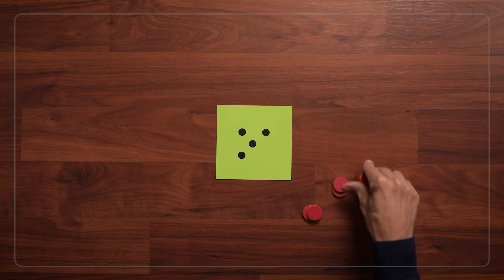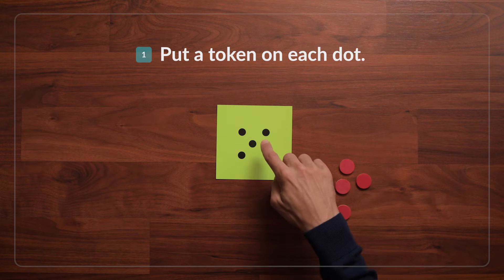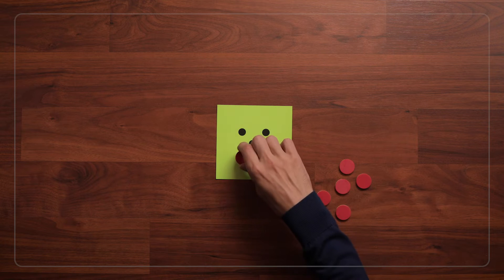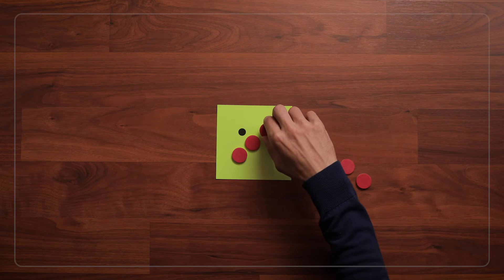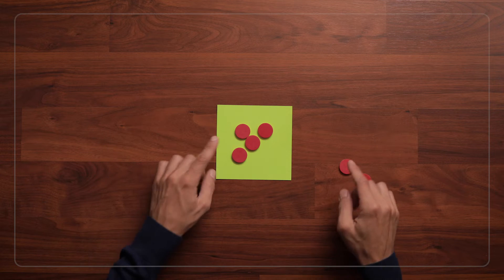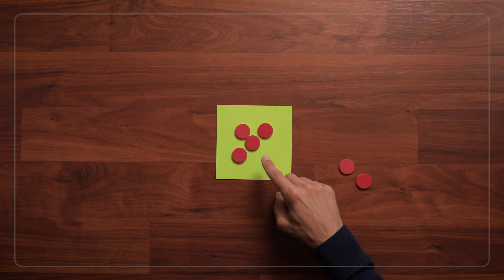First, I'll put out a large dot card and say, let's put our tokens on the dots on this card and see how many there are. And we'll count out loud as we do this. One, two, three, four. Four dots. This helps kids get a sense of one-to-one correspondence, or that each time there's a dot, you put down one token.